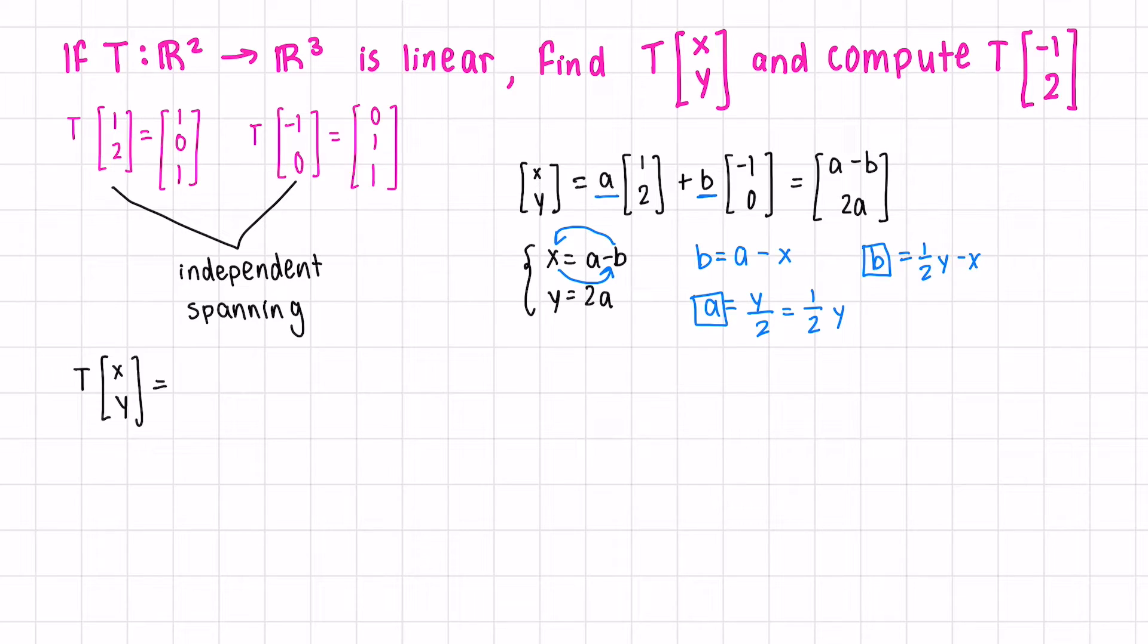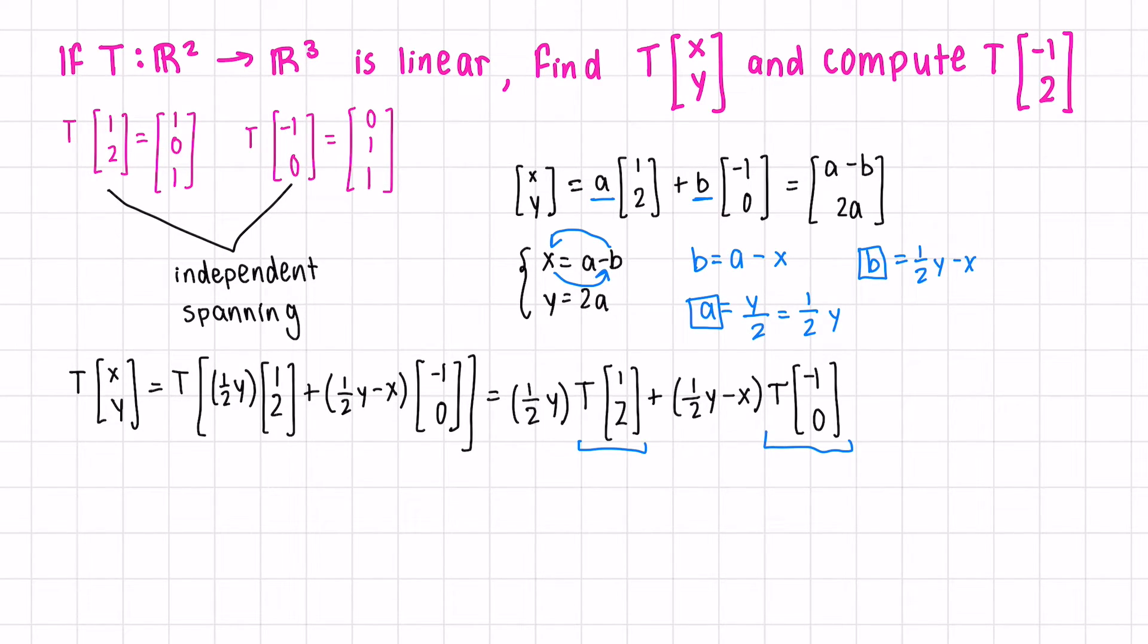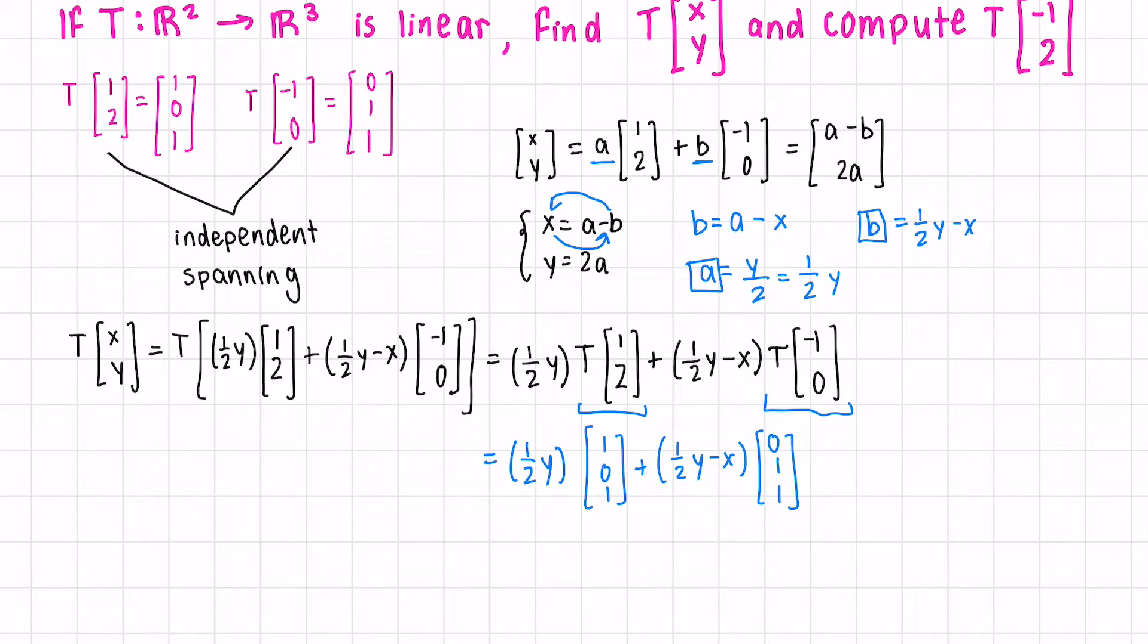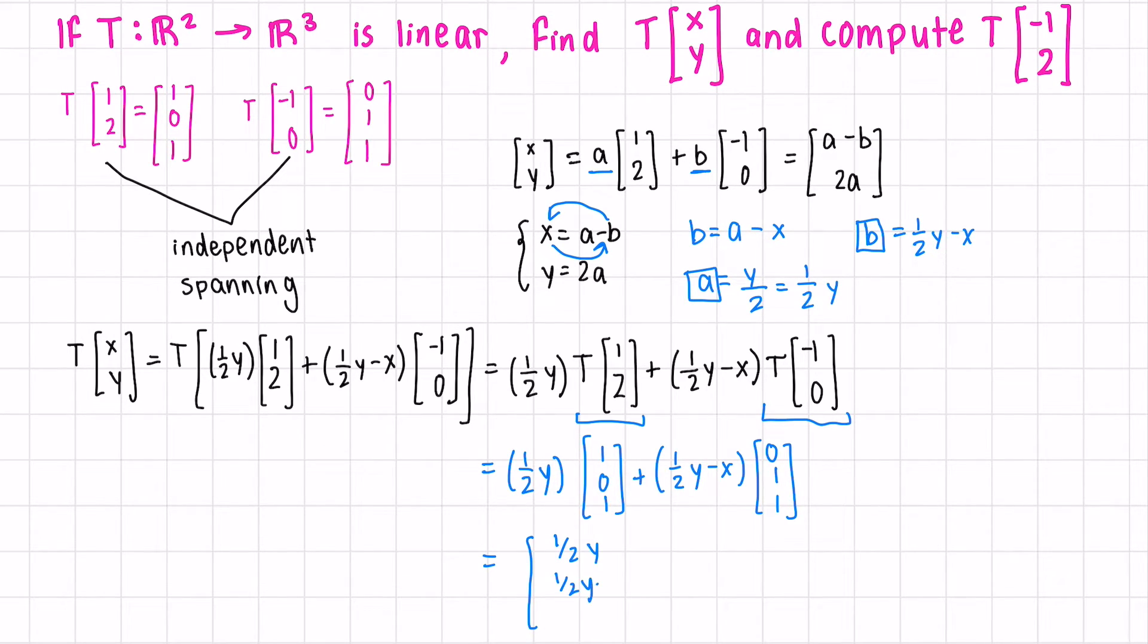Next, we can say that T XY, well, let's rewrite XY in a different way as a linear combination of 1, 2 and negative 1, 0. In place of A, 1 over 2 Y, and in place of B, 1 half Y minus X. And because this linear transformation, by definition, is closed under addition and scalar multiplication, we can rewrite this. But we know the transformed versions of these two vectors, so we can rewrite them. Now our terms are in R3, which we're looking for. We can collect our like terms. On the top, we have 1 half Y, then 1 half Y minus X, and then 1 half Y plus 1 half Y minus X, Y minus X. We've just defined our transformation, where an arbitrary vector XY will land in our codomain or in R3.